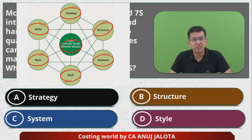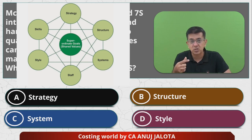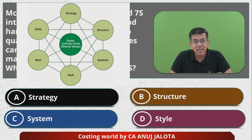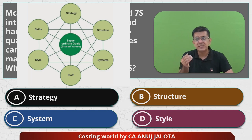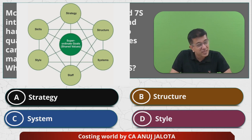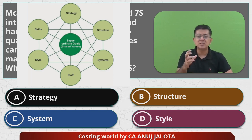All seven things are divided into two parts. Hard S are those which are easy to see and easy to quantify, and hence changes can be made. For example, Strategy — every company has a strategy easy to explain to employees and to the world, like Apple's strategy of premium phones. Structure could be line, functional, or matrix — it is easily identifiable: who reports to whom. Systems can be seen because it is basically hardware — you can see how a company works.